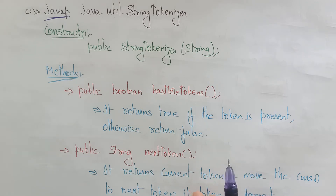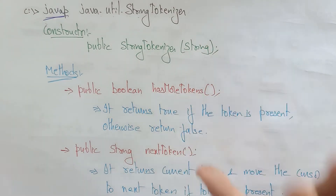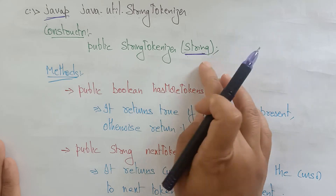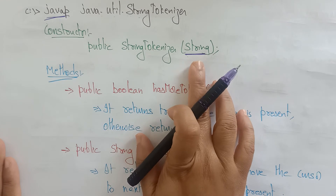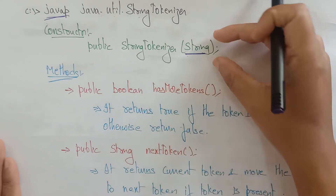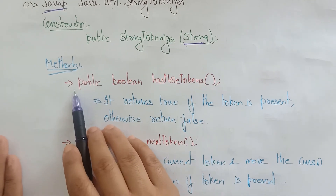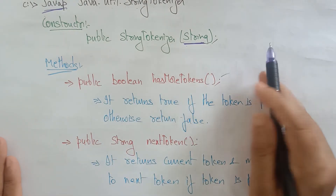I want to write two programs: one to count the number of tokens, and another to iterate token by token. For that, I need specific methods. The constructor is: public StringTokenizer(String s) — it takes a String as a parameter.